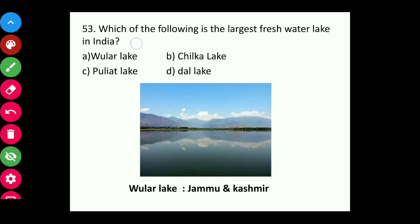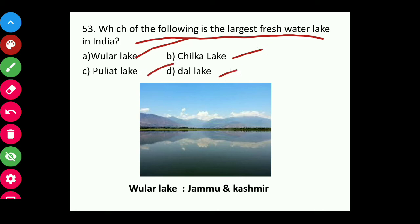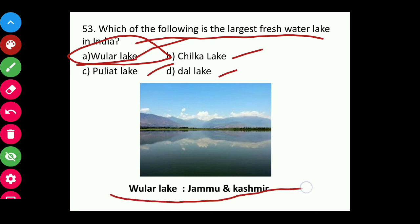Question fifty-three: Which of the following is the largest freshwater lake in India — Wular Lake, Chilika Lake, Pulicat Lake, or Dal Lake? The answer is Wular Lake — the largest freshwater lake in India, located in Jammu and Kashmir.